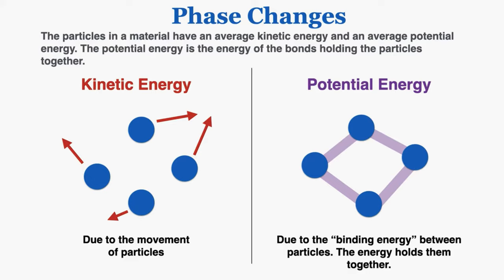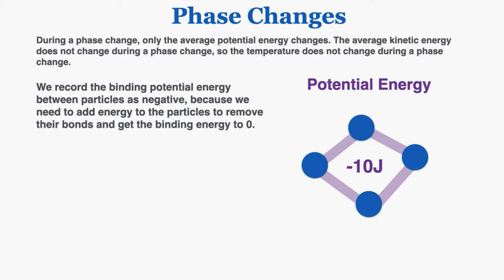The particles in a material have an average kinetic energy and an average potential energy. The potential energy is the energy of the bonds holding the particles together. During a phase change, only the average potential energy changes — the average kinetic energy does not change during a phase change, so the temperature does not change during a phase change. I'll address that more in an animation in a minute, but first I need to talk a little more about potential energy.